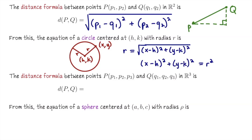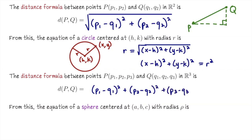Now let's go up to R3 and see similar notions there. If I have two points P and Q in R3, I need to give three coordinates for each. Point P has x-coordinate P1, y-coordinate P2, and z-coordinate P3, and similarly for Q. The distance formula from P to Q in R3 is analogous to the formula in R2: it's the square root of (P1 minus Q1) squared plus (P2 minus Q2) squared plus (P3 minus Q3) squared.